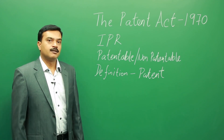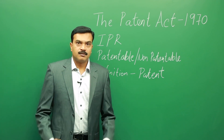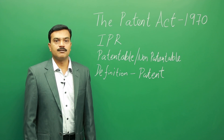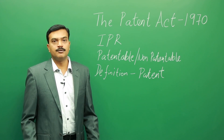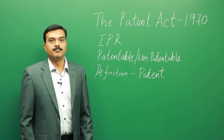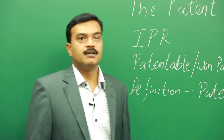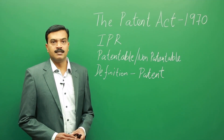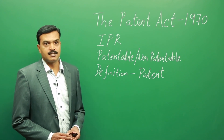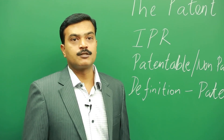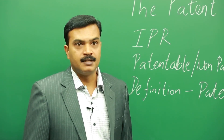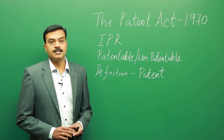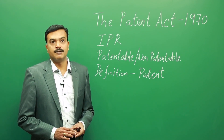Now let us look at what is the main concentration of the Patents Act. It starts with the definition of the patent — how do you define a patent per se. A patent is an intellectual property right relating to inventions, basically a product or process, and is the grant of an exclusive right for a limited period by the government to the patentee in exchange for full disclosure of the invention.